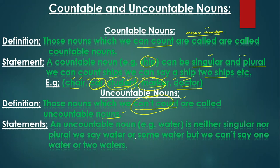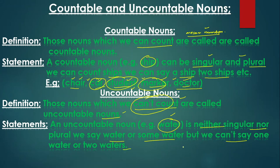An example of an uncountable noun is water. Water is neither singular nor plural — it has no singular, no plural. We say water, or by measurement: some water, a little water, much water. But we cannot say one water, two waters, five waters — so that is an uncountable noun.